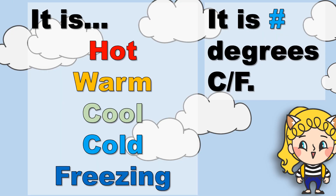To talk about the temperature, you can say it is hot, warm, cool, cold, or freezing. Or you can say the number of degrees — it is zero degrees Celsius, it is 32 degrees Fahrenheit.